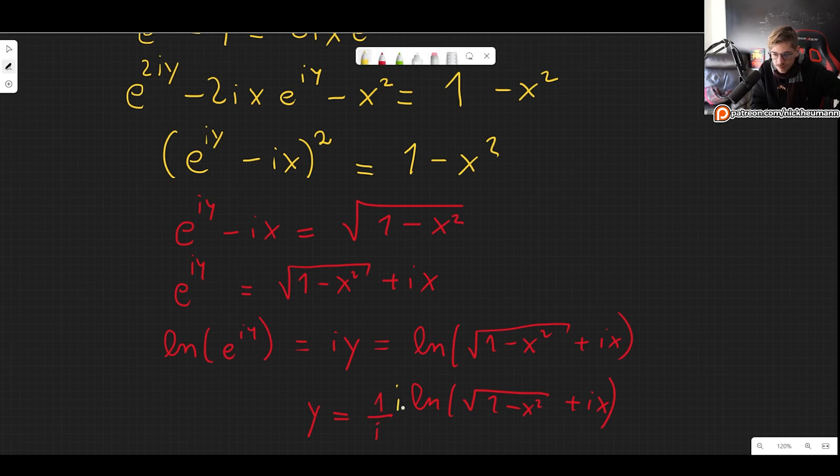So 1 minus x squared plus ix. And something we can do is multiply and divide by i here. So basically, we multiply and divide by i. It isn't necessary, but I like this notation more. So we get i in the numerator and i squared, which is minus 1 here. So we get minus i.